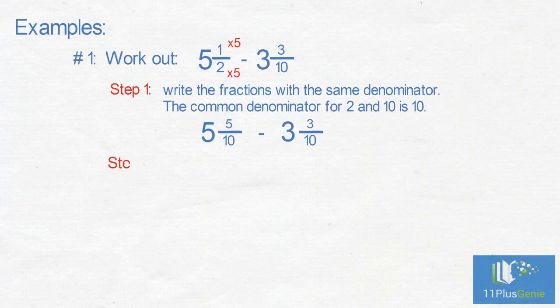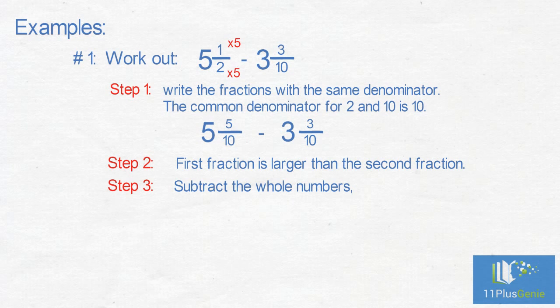Step 2: The first fraction is larger than the second fraction. Step 3: We subtract the whole numbers. 5 take away 3 equals 2. Subtract the fractions. Remember, we only subtract the numerators. So, 5 take away 3 equals 2. We have 2 and 2 tenths.